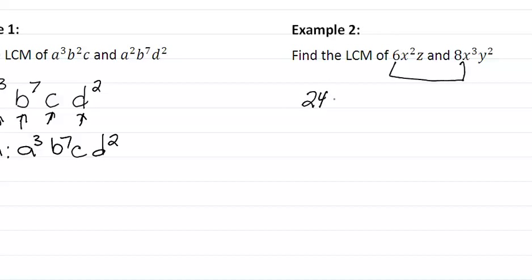Now, let's look at our variables. We have x, y (we usually write these in alphabetical order), and z. We want to take the highest exponent for each variable. For x that will be 3, for y that will be 2, and for z the exponent will be 1. So our LCM is simply 24x cubed y squared z.